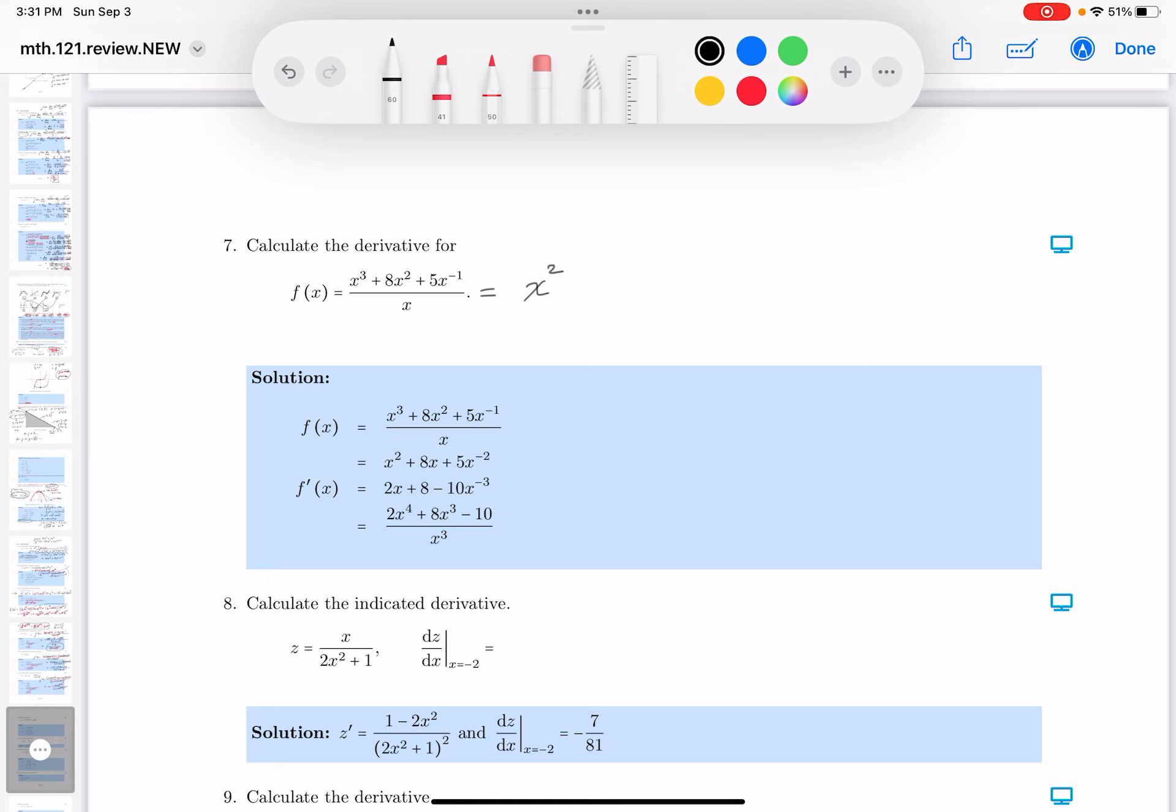We're going to get x squared plus 8x, and this is going to be plus 5x to the minus 1 minus another one, minus 2. By the way, x cannot be equal to 0.